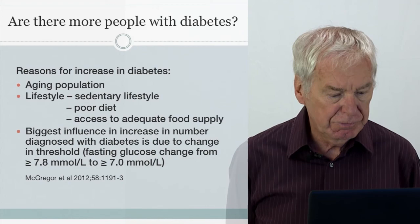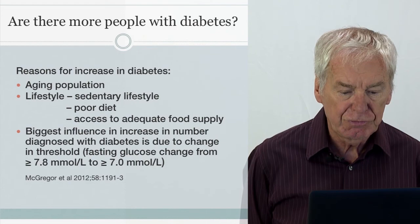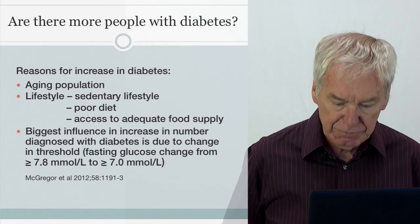However, in a controversial paper published in 2012, it has been suggested that the biggest influence driving increased diagnoses of diabetes is the change in the threshold for fasting glucose from 7.8 down to 7.0 mmol/L.